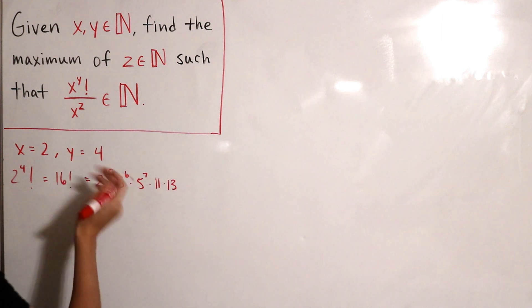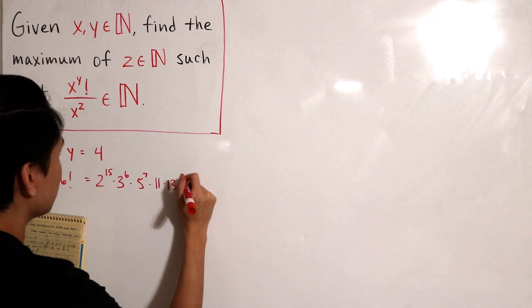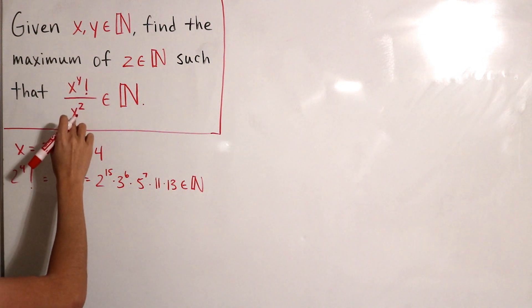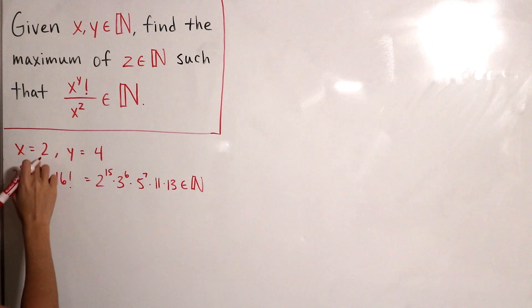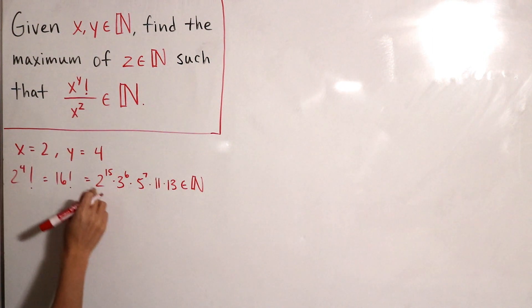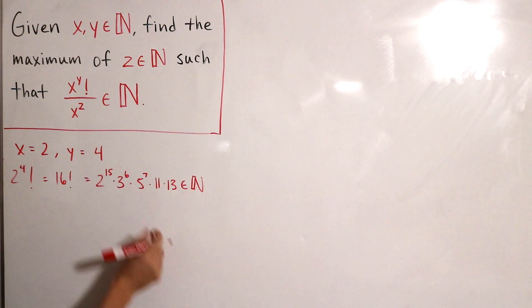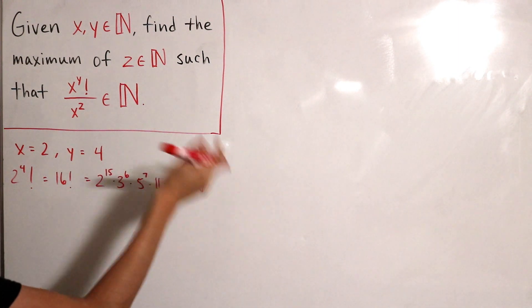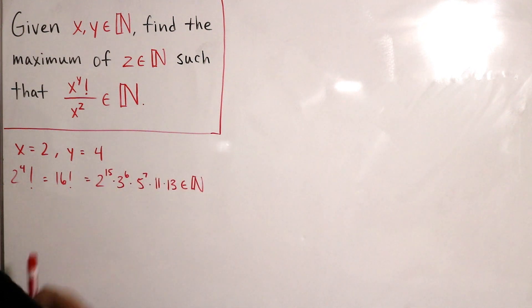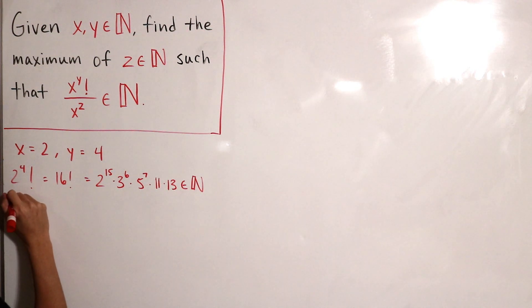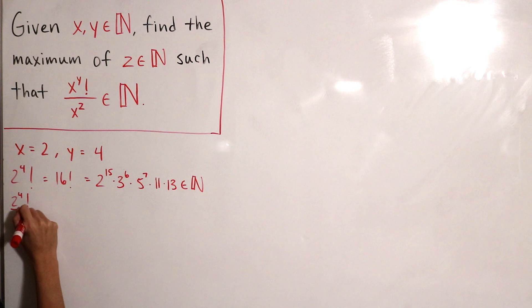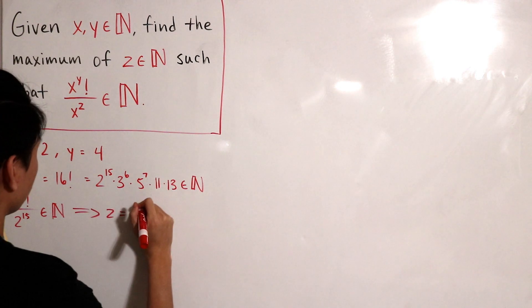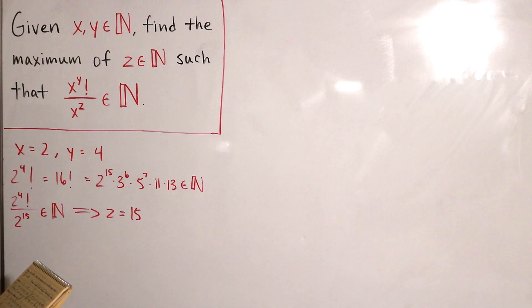Of course, with this being the factorial as a product of natural numbers, this expression is indeed a natural number. Since x equals 2, our base is 2, and we notice there's a base 2 with exponent 15 in the prime factorization. We can divide both sides by 2 to the 15, which still preserves the fact that the result is a natural number. So 2 to the power 4-factorial divided by 2 to the power 15 is still a natural number, and we conclude that z equals 15.